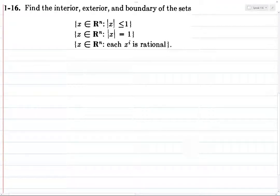We've got a long exercise to get through, so let's get started. We need to find the interior, exterior, and boundary of each of these three sets, so we need to find nine things total.